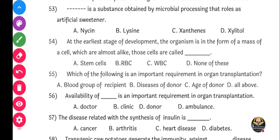Next question: At the earliest stage of development, the organism is in the form of a mass of cells which are almost alike. Those cells are called dash. Options: Stem cells, RBC, WBC, or none of the above. Correct answer: option A, stem cells.